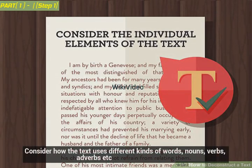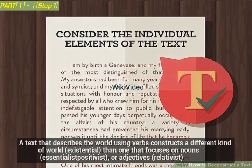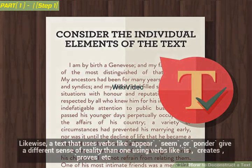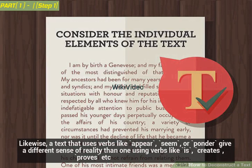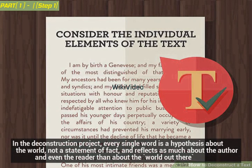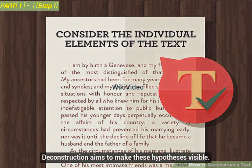Consider how the text uses different kinds of words — nouns, verbs, adverbs, etc. A text that describes the world using verbs constructs a different kind of world than one that focuses on nouns (essentialist, positivist) or adjectives (relativist). Likewise, a text that uses verbs like 'appear,' 'seem,' or 'ponder' gives a different sense of reality than one using verbs like 'is,' 'creates,' or 'proves.' In the deconstruction project, every single word is a hypothesis about the world, not a statement of fact, and reflects as much about the author and even the reader as about the world out there. Deconstruction aims to make these hypotheses visible.